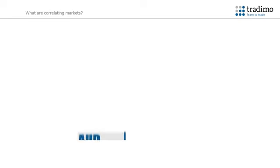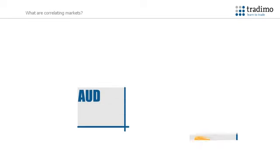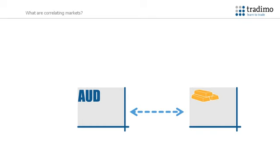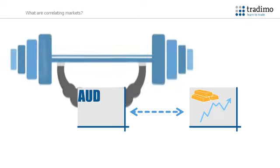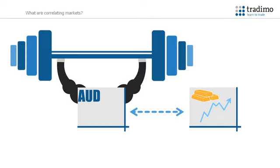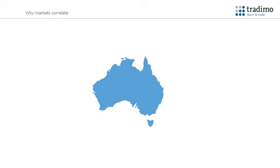For example, the Australian dollar and gold are closely linked, and when the price of gold increases, the Australian dollar becomes stronger. Let's look at this more closely to see why.